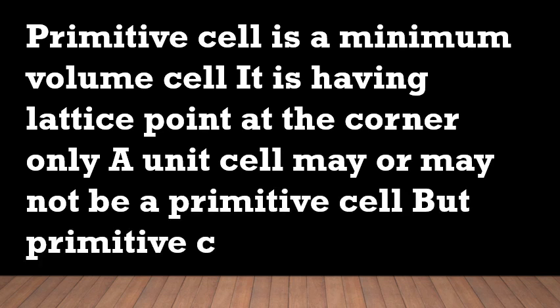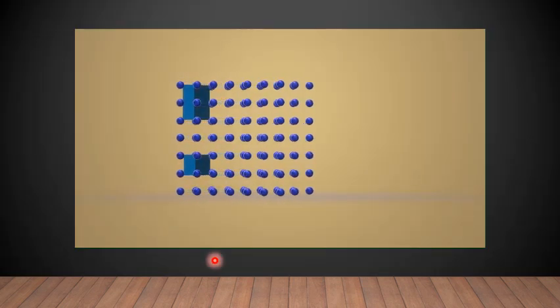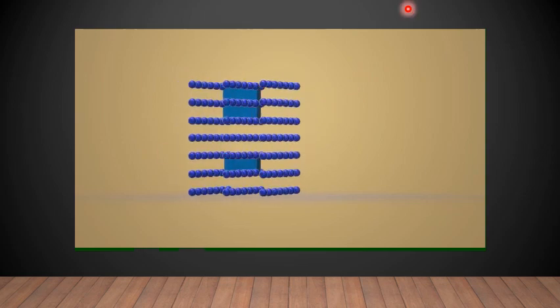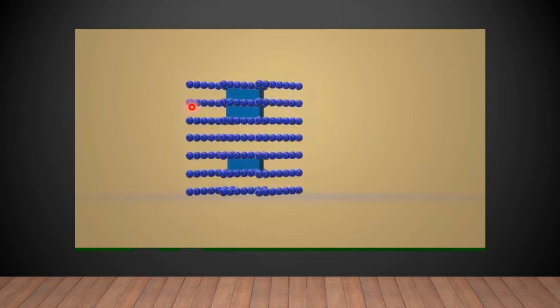but a primitive cell is a unit cell. This cell is a primitive cell as it is having the lattice point at the corner only, but this cell is not a primitive cell because it is having lattice points at the middle of the edges too.